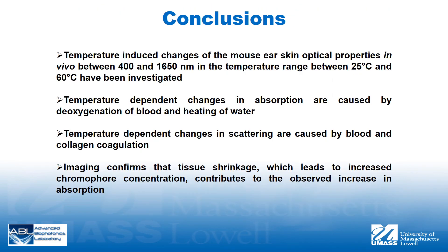In conclusion, we have investigated the temperature-induced changes of mouse ear skin optical properties in vivo between 400 and 1650 nanometers, in the temperature range between 25 and 60 degrees Celsius. Our results demonstrate that major differences in absorption are caused by deoxygenation of blood and heating of water, while major differences in scattering are caused by blood and collagen coagulation. Reflectance confocal microscopy confirms these findings.